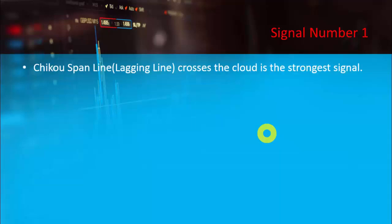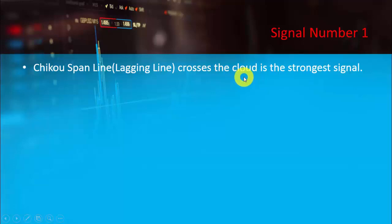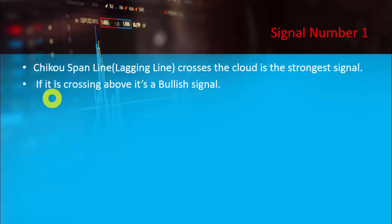Signal number one, interpretation number one: we are going to look at the Chikou Span, also known as the lagging line. Whenever the Chikou Span line is going to cross the cloud of this system, this is going to be considered as the strongest signal. For many people this is a very important interpretation and they will take their entry.